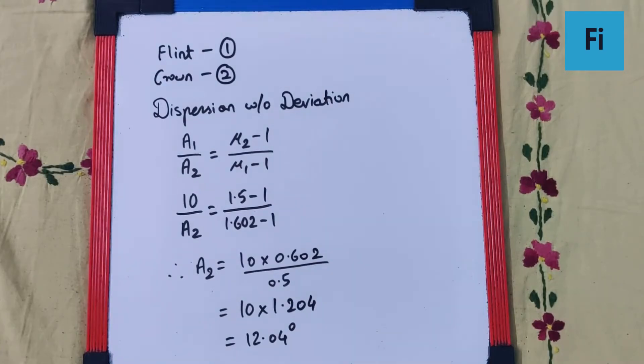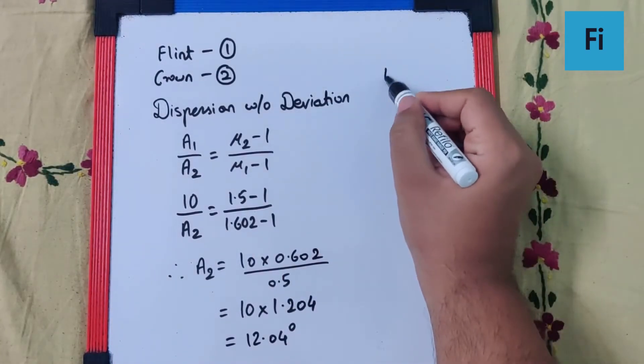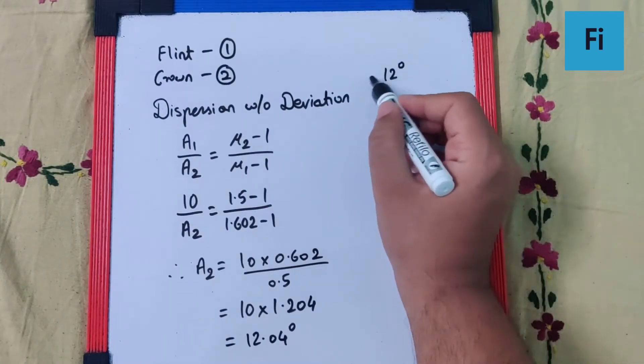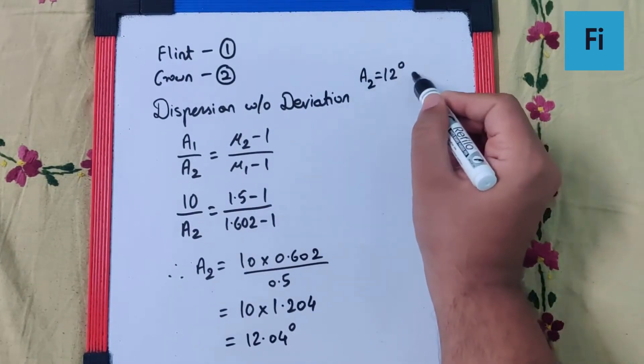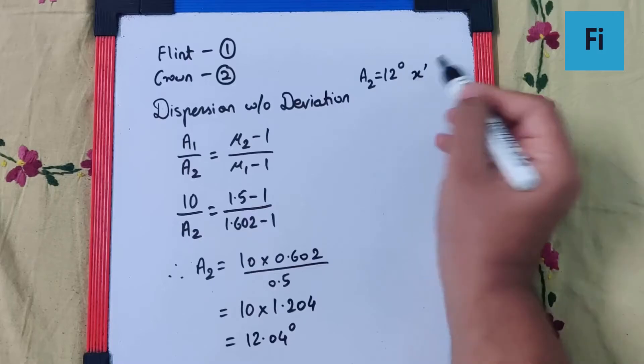Now looking at the options, they're given in degrees and minutes. So definitely 12 degrees will be the A2 value. But how many minutes? Let's call this x minutes.